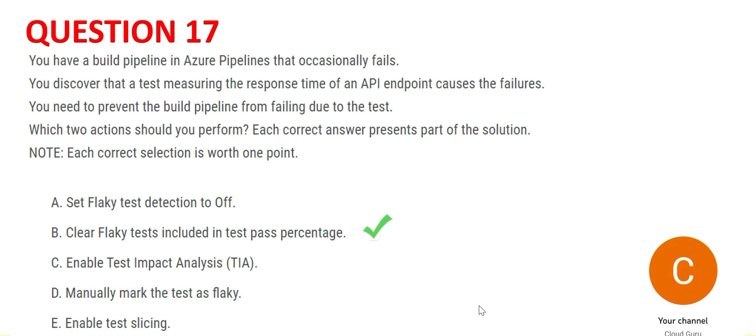Test Impact Analysis (TIA) is used when your code has become very large and regression testing takes too long. Instead of removing time-consuming test cases and risking code quality, TIA executes only the incremental test cases for whatever code changes have been made. However, in this case we cannot use TIA because there is no matching use case, so C is wrong. Option D says to manually mark the test as flaky.